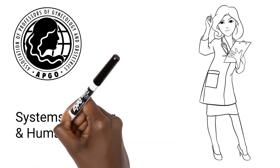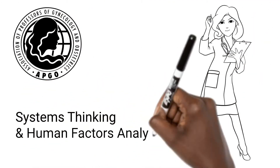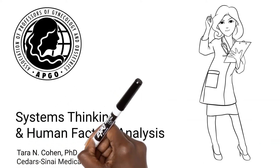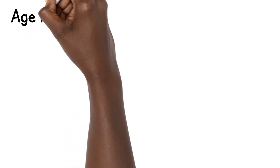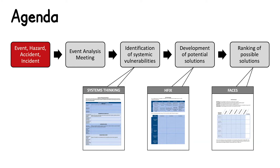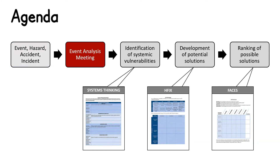This scenario focuses on understanding event analysis, systems thinking, and human factors in the context of ectopic pregnancy. Most event analysis meetings are initiated after an event, hazard, accident, or incident takes place in an institution. Event analysis meetings are often referred to as root cause analysis, or RCA, meetings.